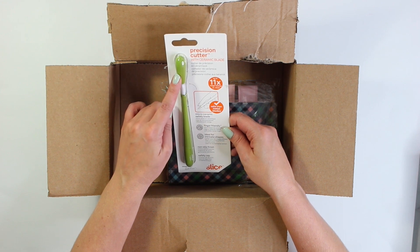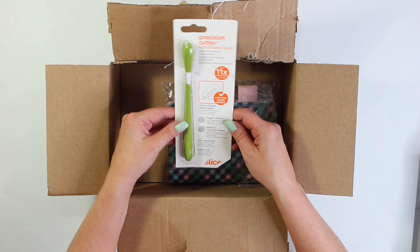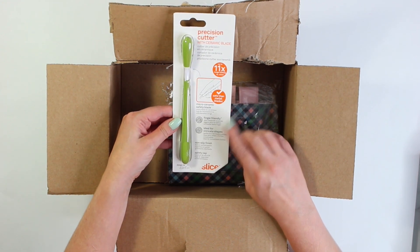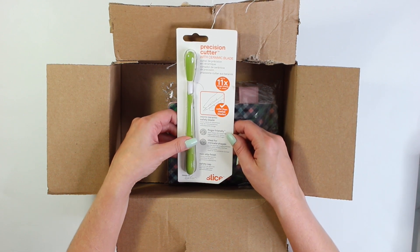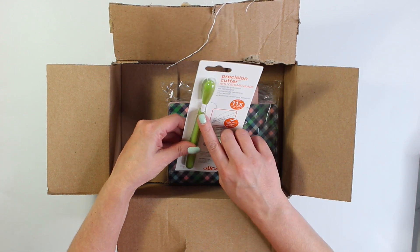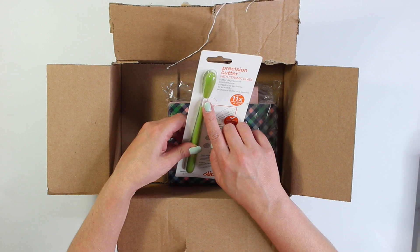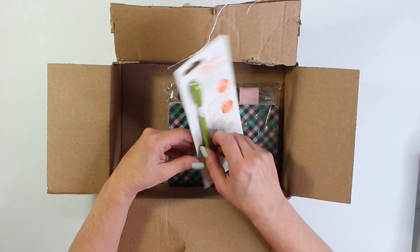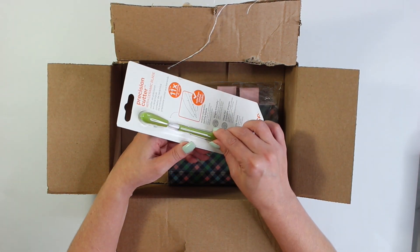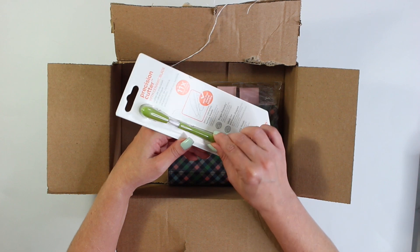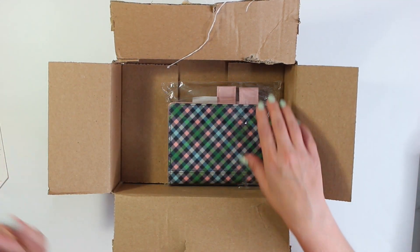This is the precision cutter. It's a ceramic blade called Slice. I've been needing one of those precision cutters and this looked really nice and not so scary like a little scalpel. So this will be really nice to cut washi and stickers with. So that's just a little extra that I picked up.